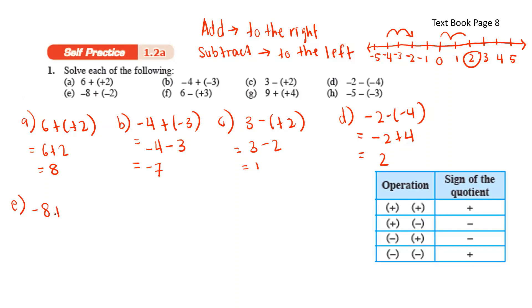Negative 8 plus negative 2. Positive and negative, you get negative. So negative 8 minus 2 will move 2 steps to the left. From negative 8, you get negative 9, negative 10.